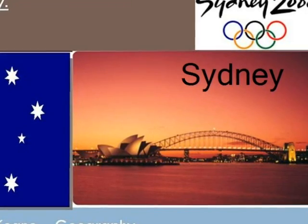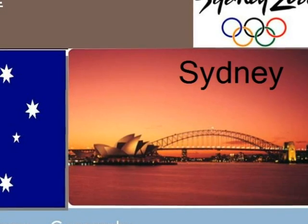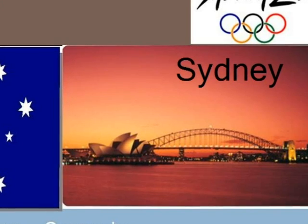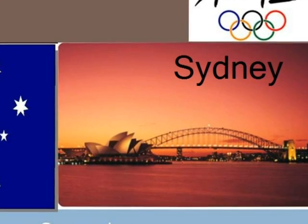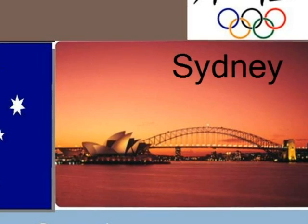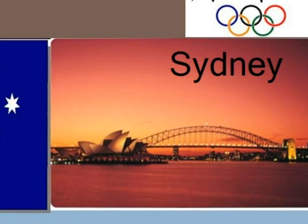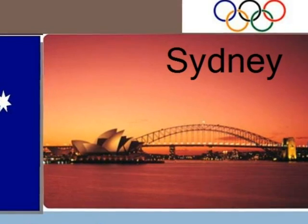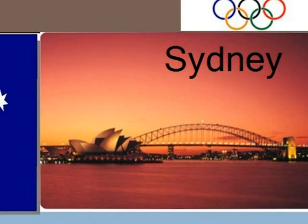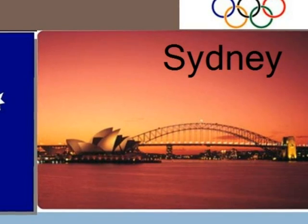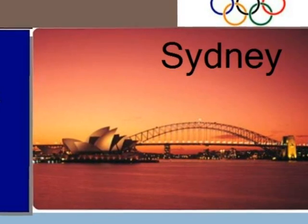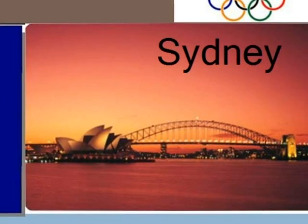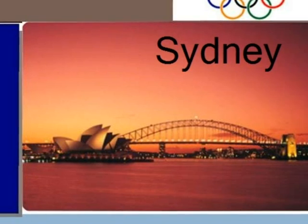The city is built on hills surrounding Port Jackson, which is commonly known as Sydney Harbour, where the iconic Sydney Opera House and the Harbour Bridge are featured prominently. The surrounding areas of the city are surrounded by national parks, and the coastal regions feature many bays, rivers, inlets and beaches, including the world famous Bondi Beach. Within the city are many notable parks, including Hyde Park and the Royal Botanical Gardens.